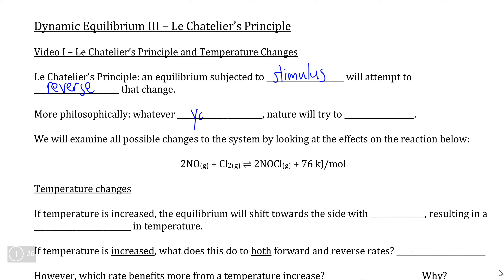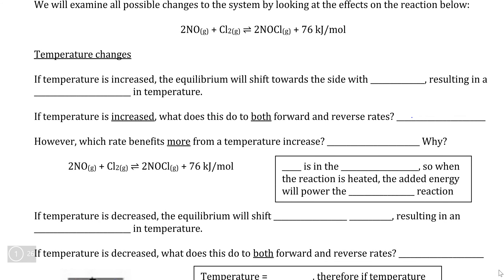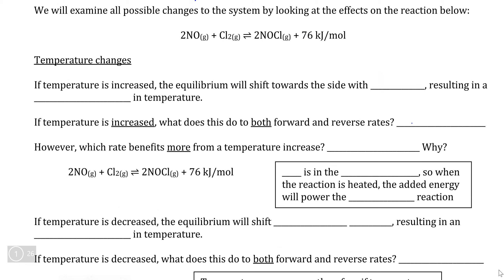A philosophical maxim that simplifies this states that whatever you do to a chemical reaction, nature itself — the equilibrium — will attempt to undo whatever this change is, maintaining a sense of balance. We're going to first look at Le Châtelier's Principle pertaining to temperature, because temperature is just a measurement of the average kinetic energy of all of our particles.